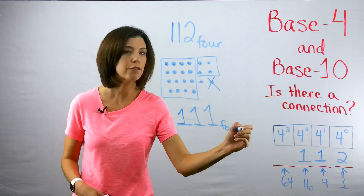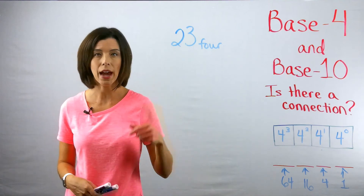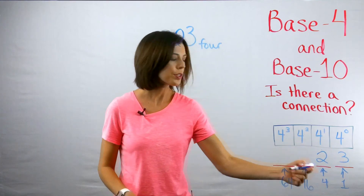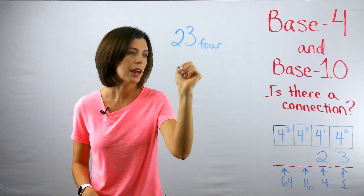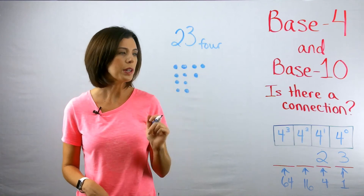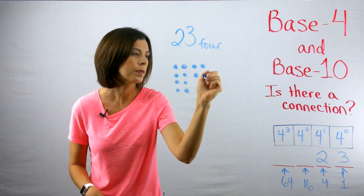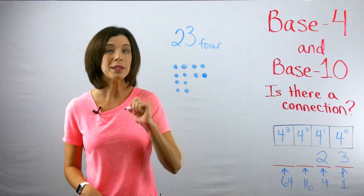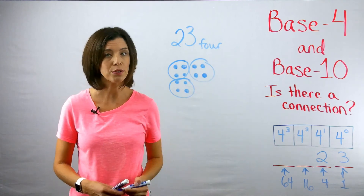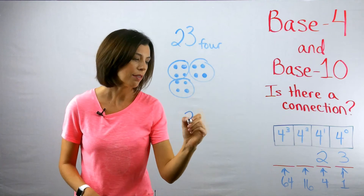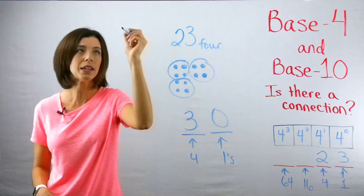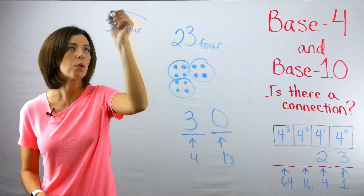What's the number that comes after? I plug it into the place value chart — I have three ones and two groups of four. I draw that out: two groups of four and three ones. If I add one more, I now have three groups of four — one, two, three — and zero ones. So the number that comes after is 30 base four.